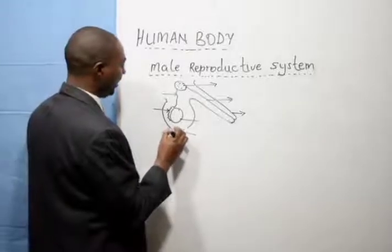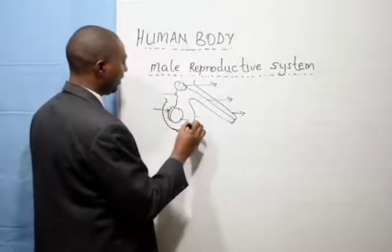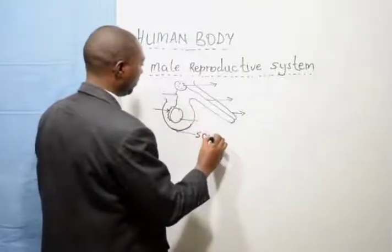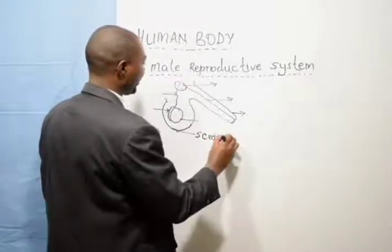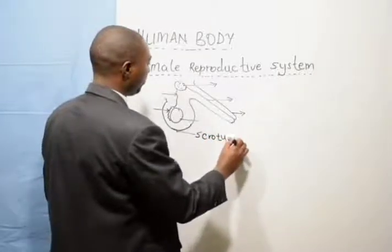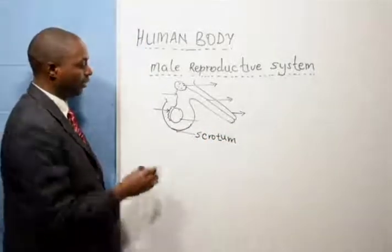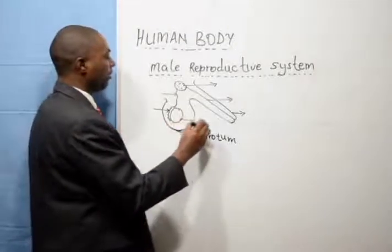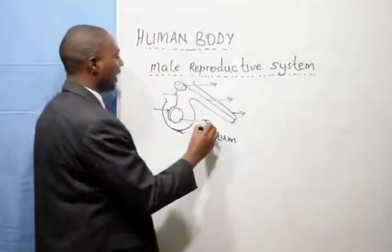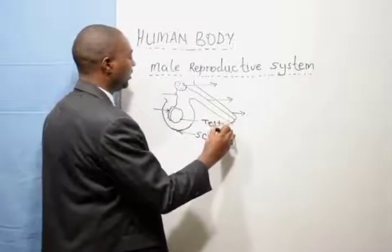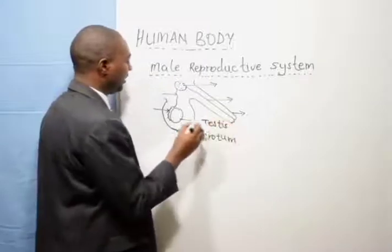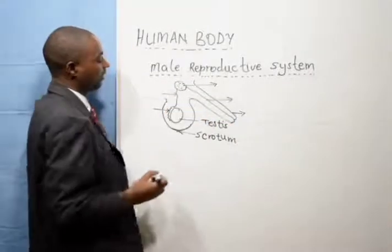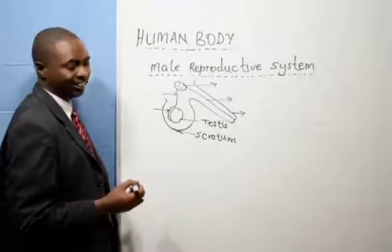This is a skin, and this skin is known as the scrotum. Then we have this one known as the testis. It is not one — there is another one on the other side. There are two testes.